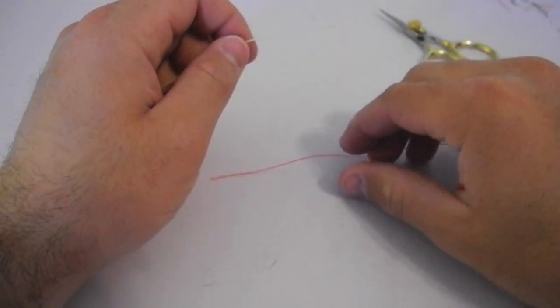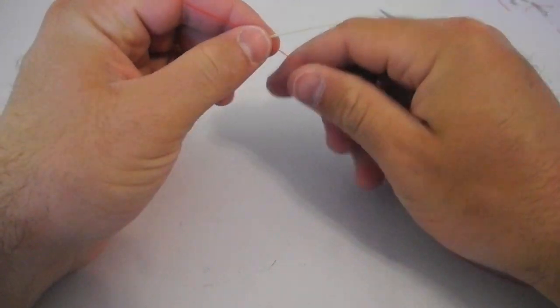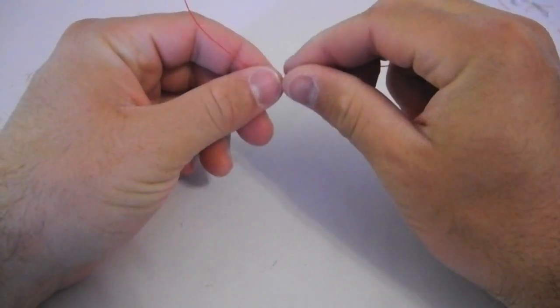So what we're going to be tying here is the nail-less nail knot, or some people call it the speedy nail knot. It's basically a knot that does not require a nail, so you can do it in the field.